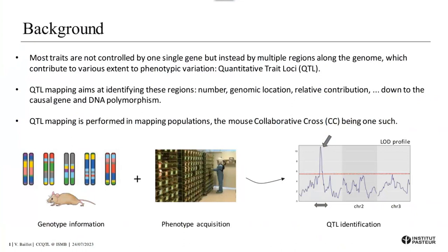To perform QTL mapping experiments we use what are called mapping populations. Several populations exist; the collaborative cross is one of them, and more specifically it's an increasingly used high-diversity mouse population that has proven to be a great model for biomedical traits. The QTL mapping procedure works as follows: you have your mapping population whose genotypes are known, and you phenotype these individuals for your trait of interest. You then combine the genotype and phenotype information to assess all along the genome the strength of association with the phenotype. That's what is given by this curve called the LOD profile, and when you pass a statistical threshold, that tells you that at a given location in the genome you've got a QTL.